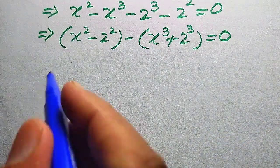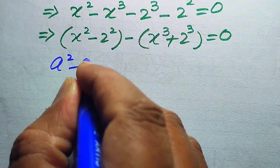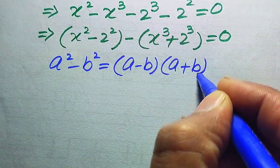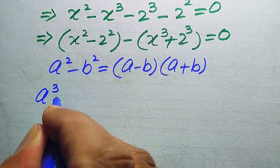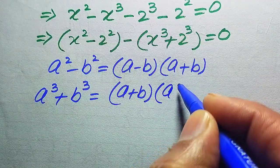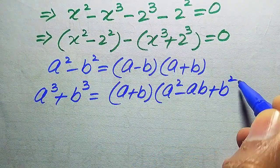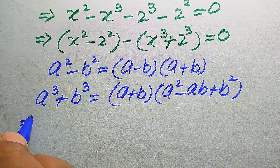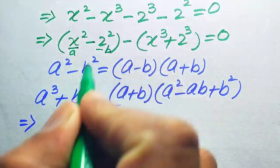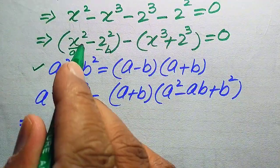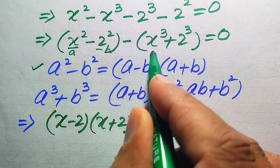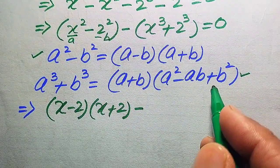We need two algebraic formulas. The first is: a squared minus b squared equals (a minus b)(a plus b). The second is: a cubed plus b cubed equals (a plus b)(a squared minus ab plus b squared). Applying the difference of squares formula to X squared minus 2 squared gives us (X minus 2)(X plus 2).